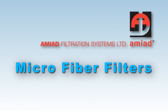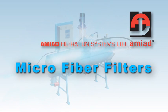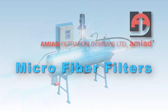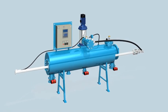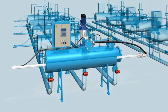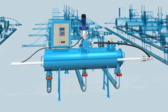AMIAD Automatic Microfiber Series fine filtration down to 2 microns. This automatic filtration system can operate independently as one single unit or as part of multiple filter installation.